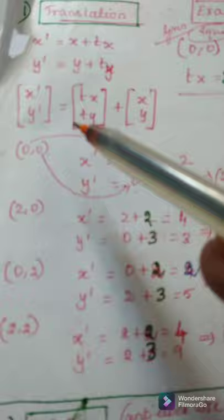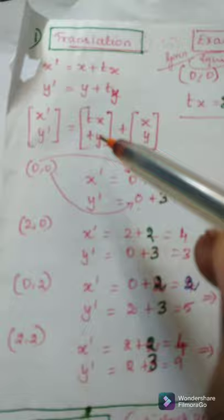Translation here, we will use 2 formulas. X dash, Y dash. X dash equal to X plus TX and Y dash equal to Y plus TY. TX, TY are translation vector. In matrix form, if we write the same equation, we can write like this. The old points plus translation vector will give the new point.